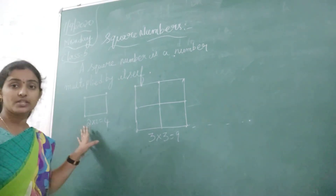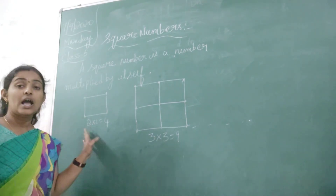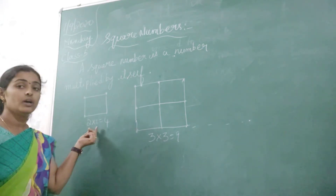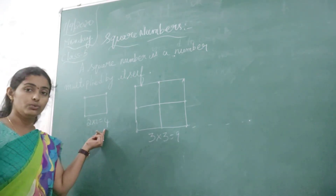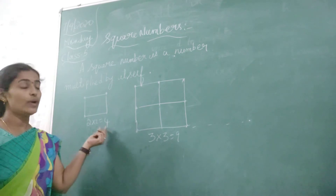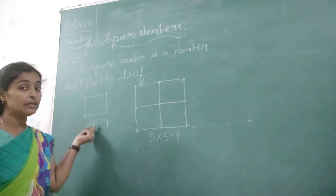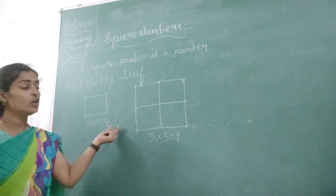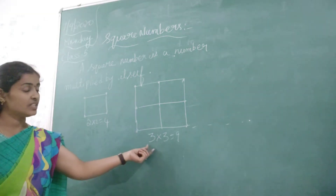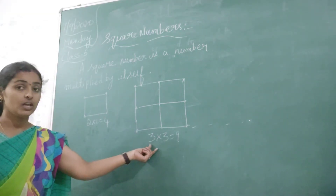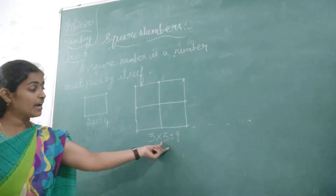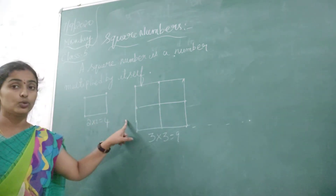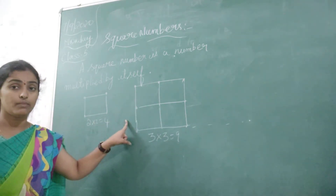So 2 is a number. Again I am taking the same number, means 2 into 2. How much you will get? 4. When 2 is multiplied with the same number, then I will get the number 4. So in the same way, if I am taking 3 and multiply it with 3 I will get 9. So you can see the 9 dots over a square box.